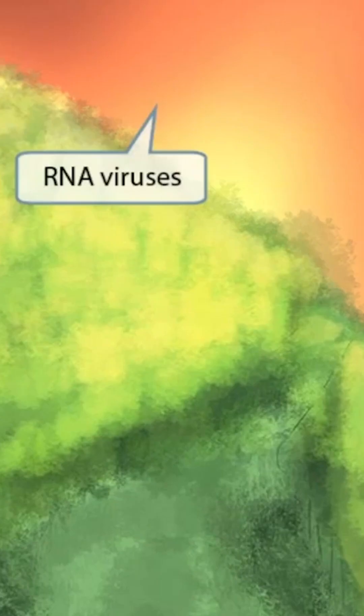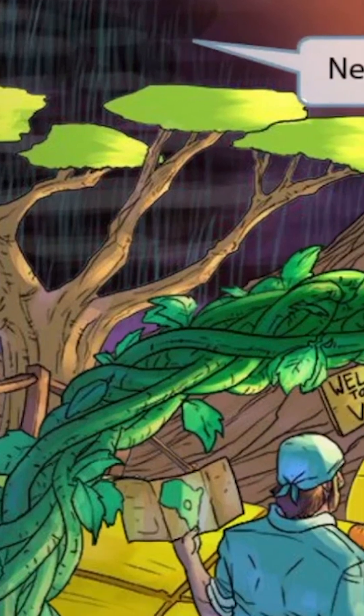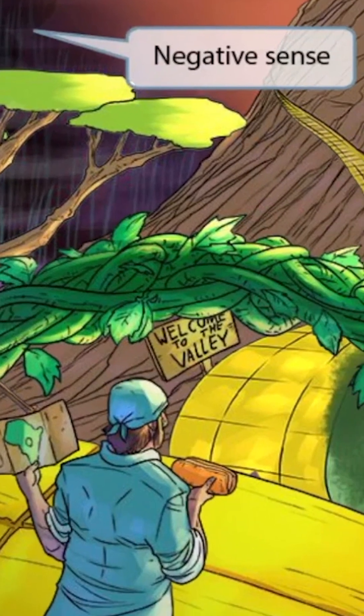Notice that most of the background is comprised of warm colors, which is to help you remember that these are RNA viruses. The spot on the left side of the image is a dark rain cloud that's about to enter the area, and this is here to help you remember that these viruses are negative sense.